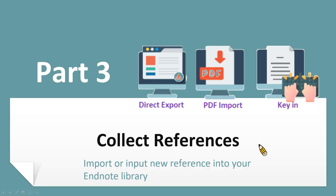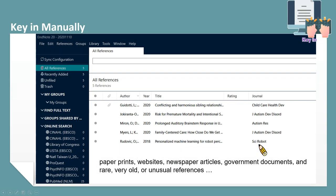Now we move on to part 3 about how to collect references. After you create a library, you can start to collect references — I will introduce three methods. The first method is keying in manually. If you want to add references from paper prints such as reading lists, syllabi, websites, newspaper articles, government documents, or rare, very old, or unusual references, you can use this method.